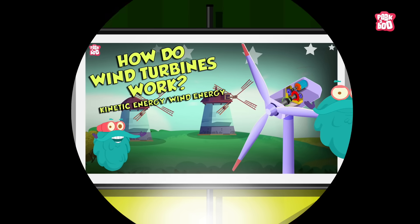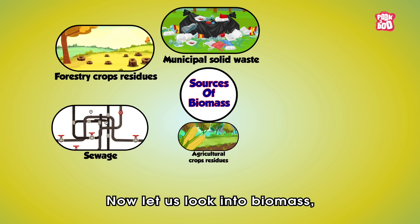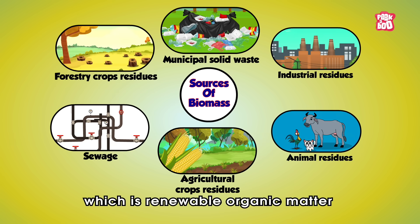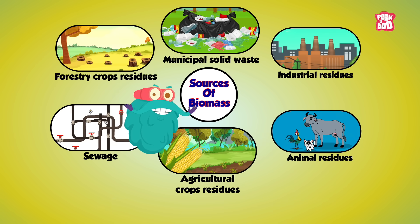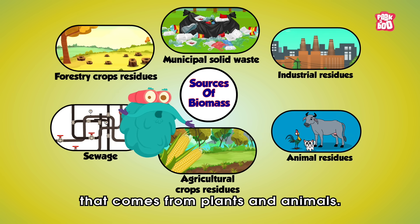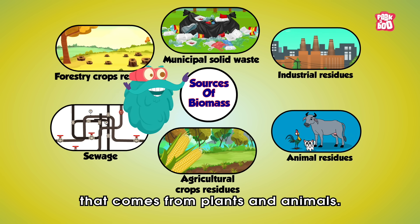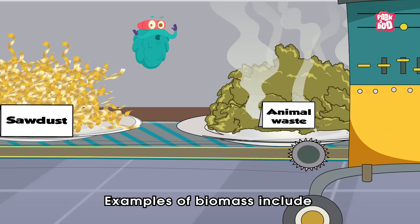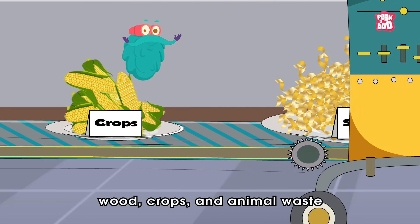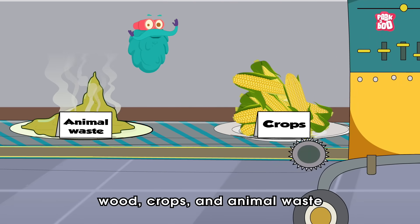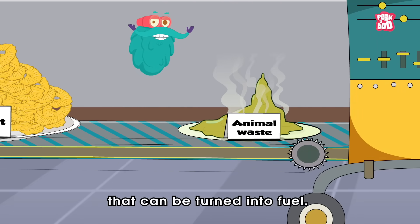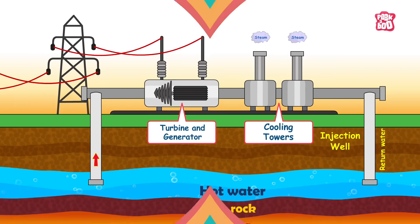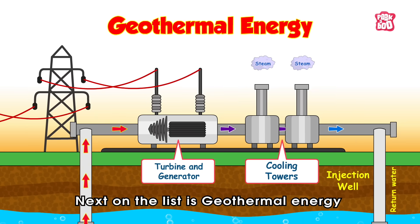Now let us look into biomass, which is renewable organic matter that comes from plants and animals. Examples of biomass include wood, crops, and animal waste that can be turned into fuel.